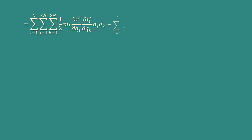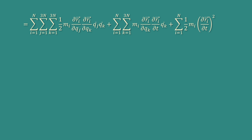Collecting all terms, T = Σᵢ Σⱼ Σₖ ½Mᵢ(∂rᵢ/∂qⱼ)(∂rᵢ/∂qₖ)q̇ⱼq̇ₖ + Σᵢ Σₖ Mᵢ(∂rᵢ/∂qⱼ)(∂rᵢ/∂t)q̇ₖ + Σᵢ ½Mᵢ(∂rᵢ/∂t)².